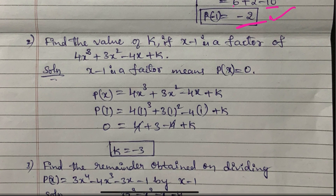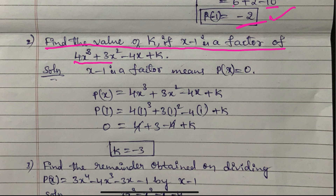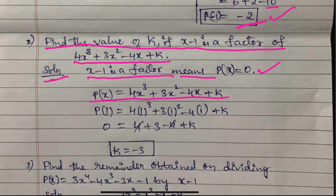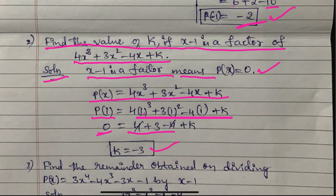Sometimes they will ask you to find the value of k. For example, if x minus 1 is a factor of 4x cubed plus 3x squared minus 4x plus k, then P(1) equals 0. Substituting: 4 times 1 cubed plus 3 times 1 squared minus 4 times 1 plus k equals 0. This gives 4 plus 3 minus 4 plus k equals 0, so k equals minus 3.